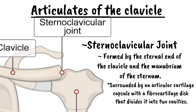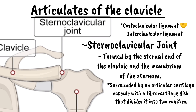There is a special thing about this joint: it is stabilized by two ligaments — the interclavicular ligament and the costoclavicular ligament. The interclavicular ligament helps to prevent any form of dislocation during shoulder depression, while the costoclavicular ligament prevents dislocation during shoulder elevation.